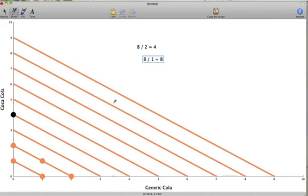So, I put a point on the horizontal axis at the number 8. My budget line represents the combinations of Coca-Cola and Generic Cola that I can afford. So, to construct my budget line, I connect the two points that we have just labeled.